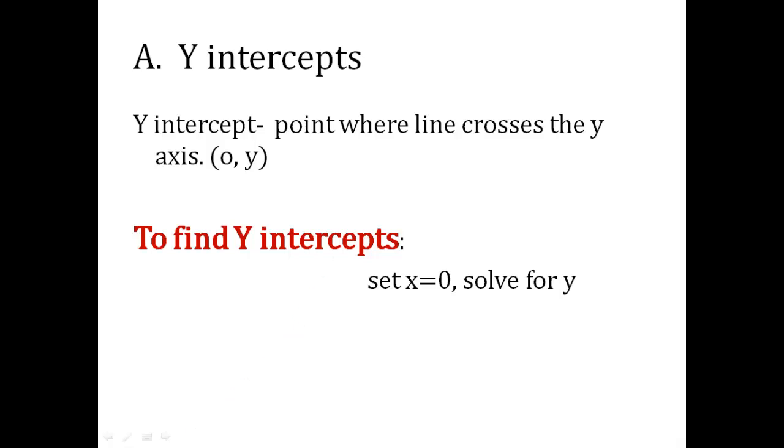Okay, y-intercepts. You should know what a y-intercept is, but in case you don't, it is the point where the line crosses the y-axis. So there's always a 0 and then some value for y. So if you have a graph and the line crosses, this is your y-intercept right there.